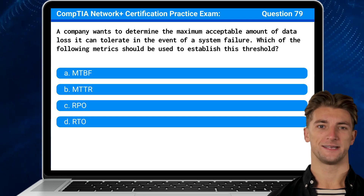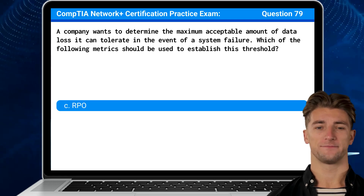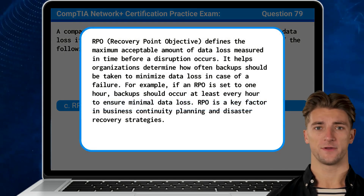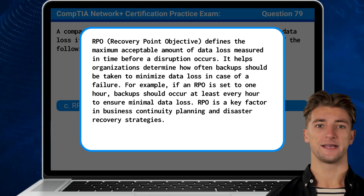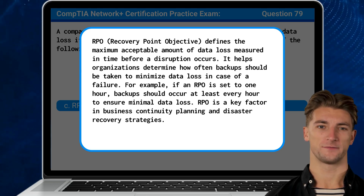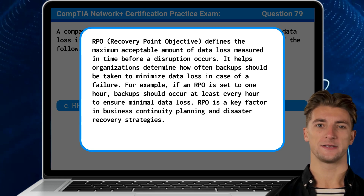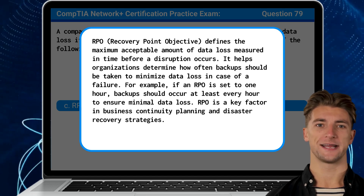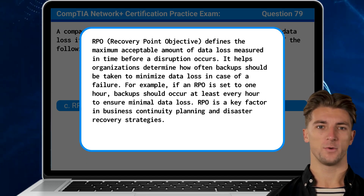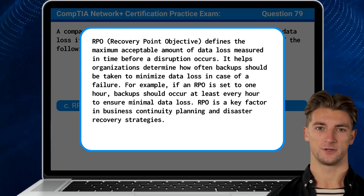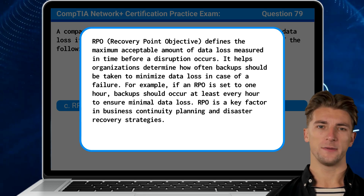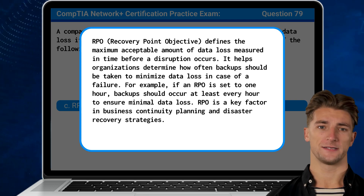The answer is C: RPO. RPO, or Recovery Point Objective, defines the maximum acceptable amount of data loss measured in time before a disruption occurs. It helps organizations determine how often backups should be taken to minimize data loss in case of a failure. For example, if an RPO is set to one hour, backups should occur at least every hour to ensure minimal data loss. RPO is a key factor in business continuity planning and disaster recovery strategies.